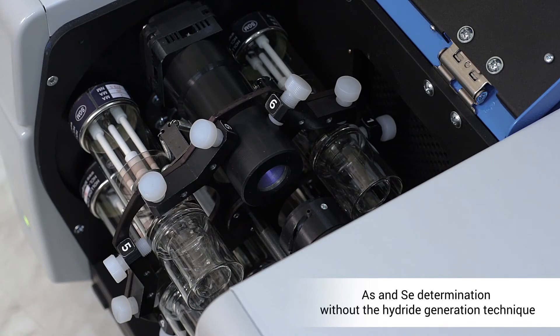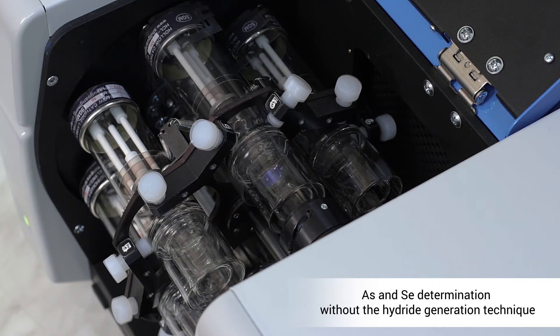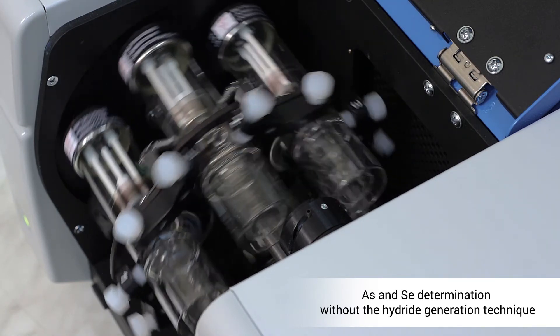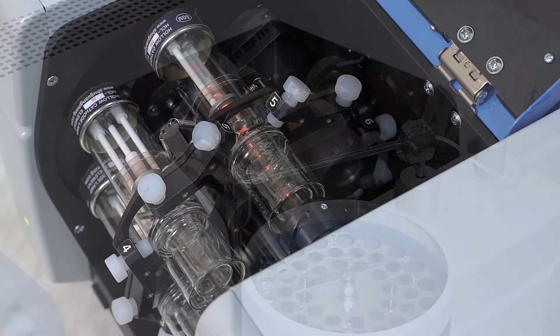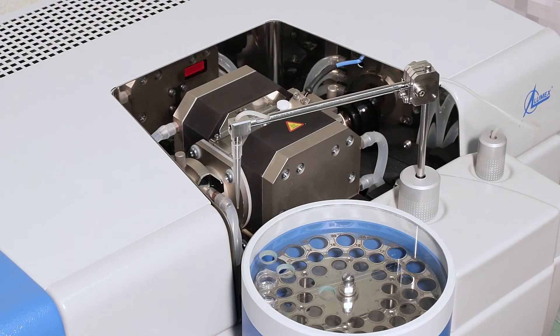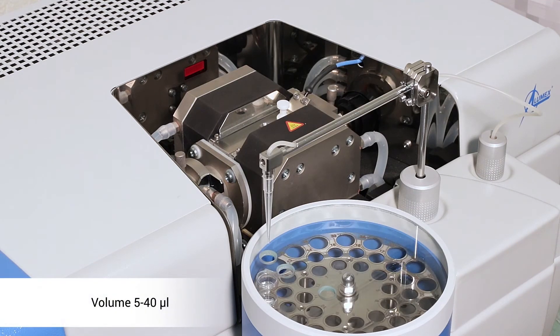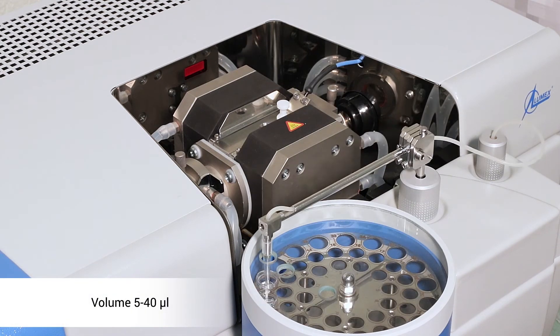Moreover, direct determination of arsenic and selenium at PPB and sub-PPB levels is achieved without the hydride generation technique. Analysis requires sample volume from 5 to 40 microliters.